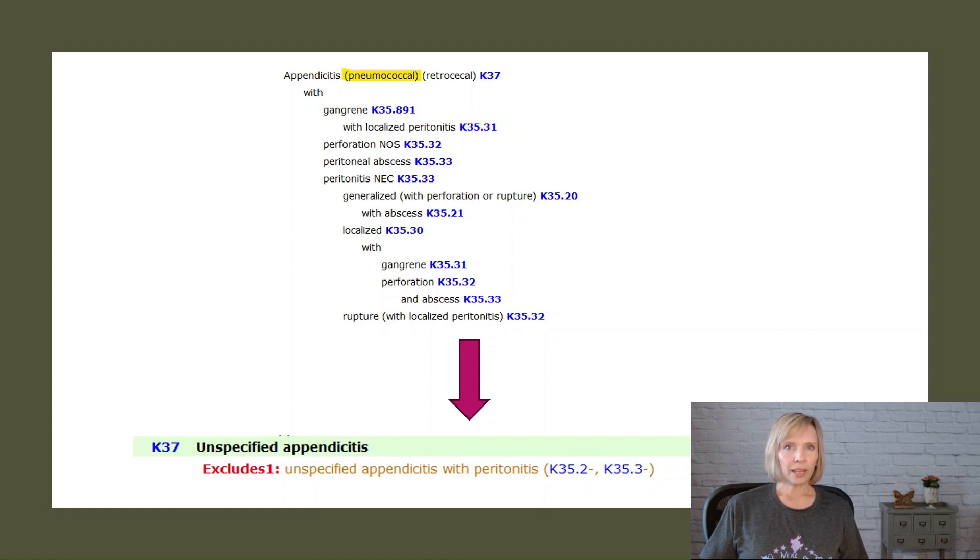For example, taking a diagnosis of pneumococcal appendicitis. When we look at the main term appendicitis, we see that pneumococcal is in parentheses and is a non-essential modifier for appendicitis. This tells us that we've got the right code for this diagnosis.